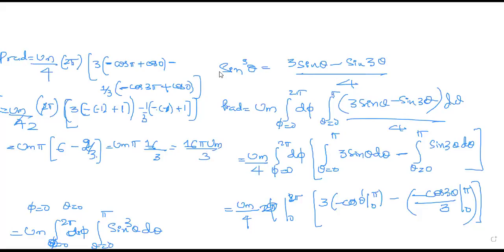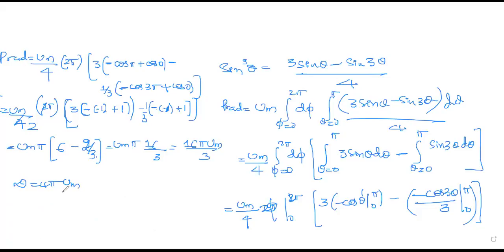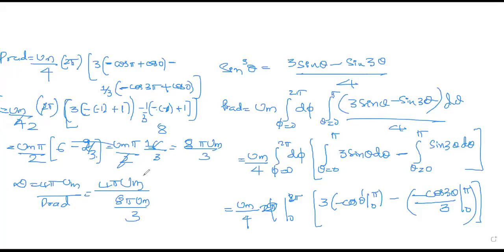Now apply to the directivity formula: D = 4πUm / (8πUm/3) = 4πUm·3 / (8πUm) = 12/8 = 3/2 = 1.5. So the directivity of the bidirectional sine square pattern is 1.5.